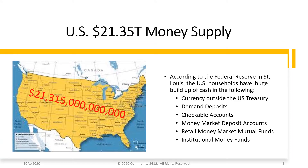Before we dive deep into the presentation, it's important to know how much money is out on the street. According to the Federal Reserve in St. Louis, U.S. households hold a huge buildup of cash in currency outside the U.S. Treasury and Federal Reserve system, demand deposits, checkable deposits, money market deposit accounts, retail money market mutual funds, and institutional money funds. The vast majority of people do not hold this money — it's a few holding back really $21.35 trillion in money supply. When this money hits the street, it will cause serious inflation, meaning prices of goods and services will go up as these dollars move into circulation. So get ready for it.